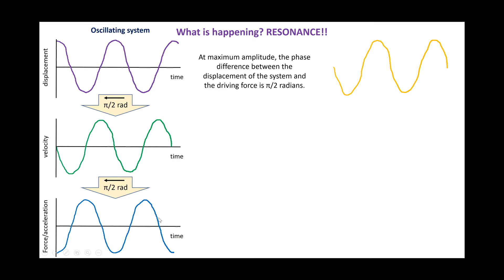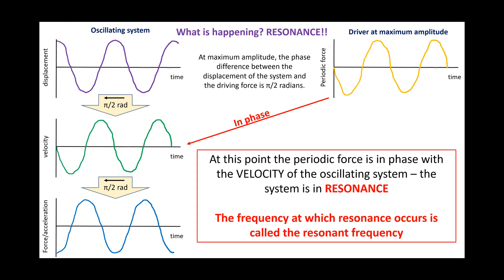At maximum amplitude, we said the phase difference between the displacement of the system and the driving force is pi by 2 radians, as you can see in this graph on the right. And this means that the periodic force at this point will be in phase with the velocity, producing this maximum amplitude. As you go beyond that, the phase difference increases from pi over 2 to pi radians. But at the point of maximum amplitude, the periodic force and the velocity will be in phase. And when this happens, we say the system is in resonance, it is vibrating at its maximum amplitude.